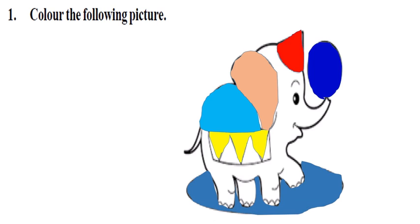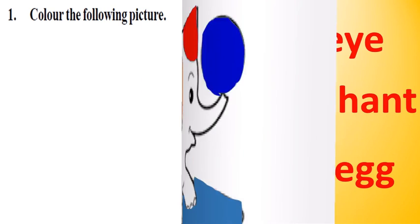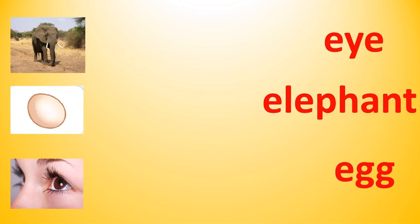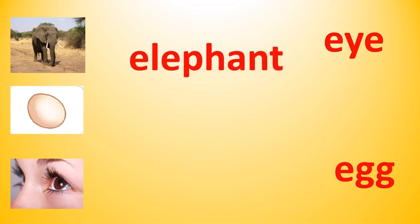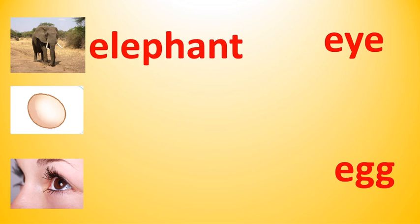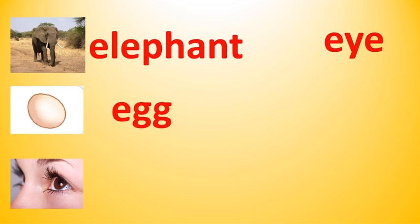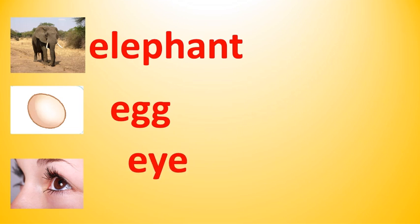Match the pictures with words. What is the first picture? It is an elephant. What is the next picture? It is an egg. Children, do you like to eat eggs? What is the next picture? Eyes.